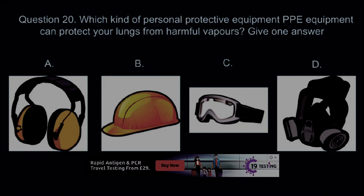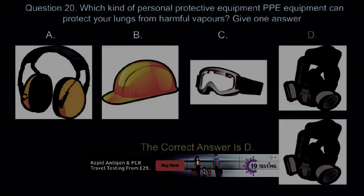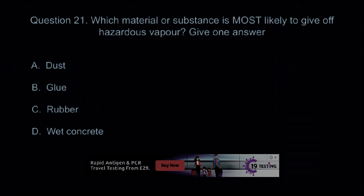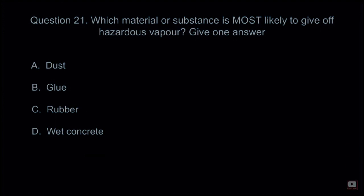Question 21: Which material or substance is most likely to give off hazardous vapor? Give one answer. A: Dust. B: Glue. C: Rubber. D: Wet concrete. The correct answer is B: Glue.